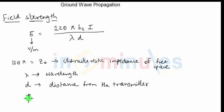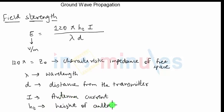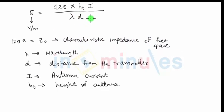Capital I is the antenna current — if you have more antenna current, then the electric field strength will also be high. HT is the effective height of the transmitting antenna, and the electric field strength is directly proportional to HT. So if the height of the antenna is more, the field strength will also be more. That's the formula for field strength at a distance small d from the transmitting antenna.